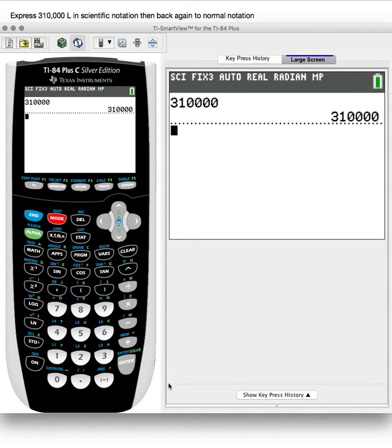And look, it looks like nothing's happened, but this is different. It's scientific and fix three. So we'll hit enter here and you'll see that it has three decimal places. So really four significant figures and it reads 3.100 times 10 to the fifth. And that's one way to do it.